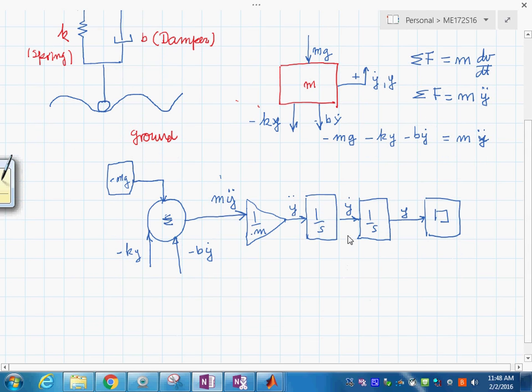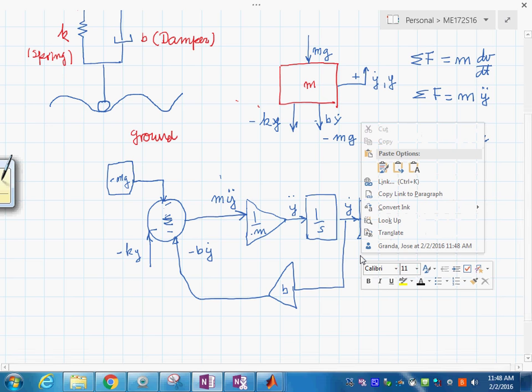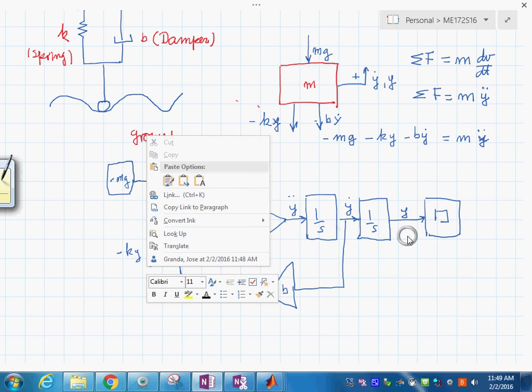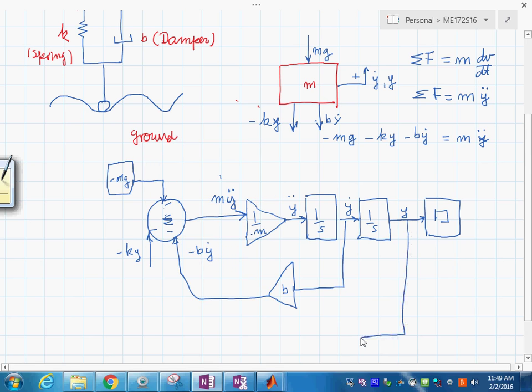Now what we're going to do is, this is b times y dot. Y dot is over here. If we multiply it by b, we create this form, and of course the signs are here: minus, minus, and minus. This is linked to y, so we need to get the y here, and then you have a constant which is k, and then it completes the graph.